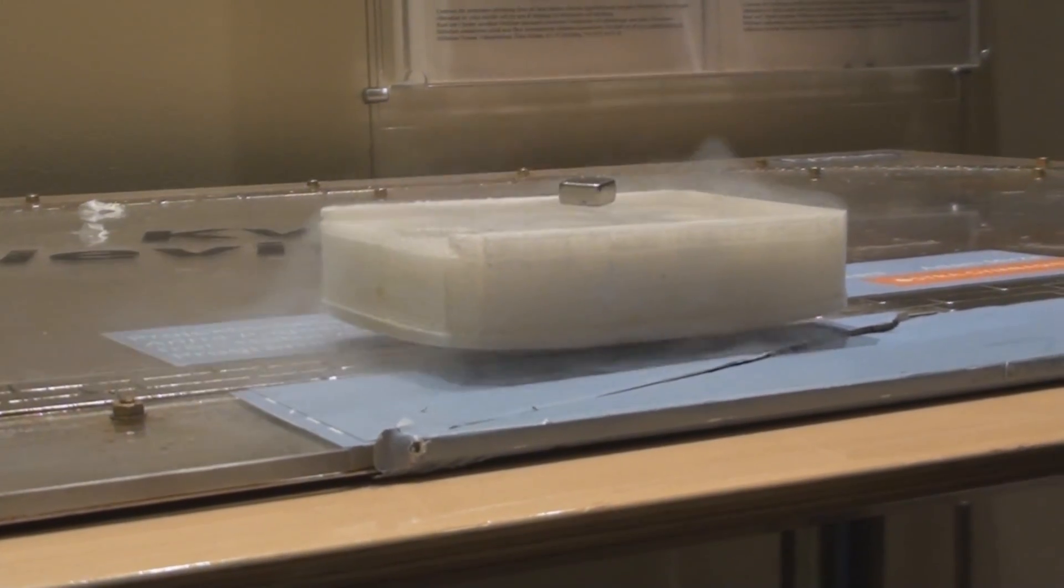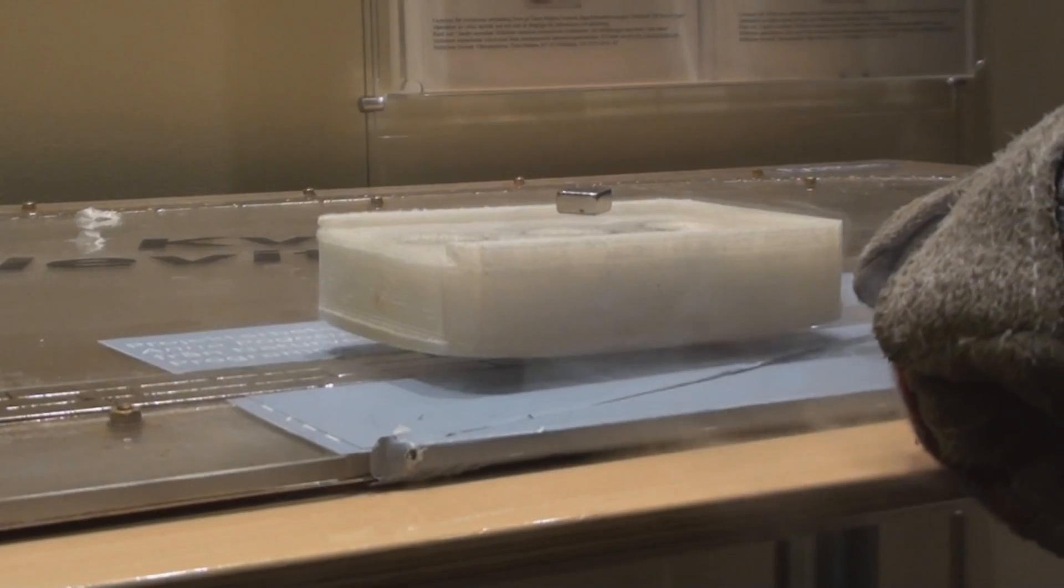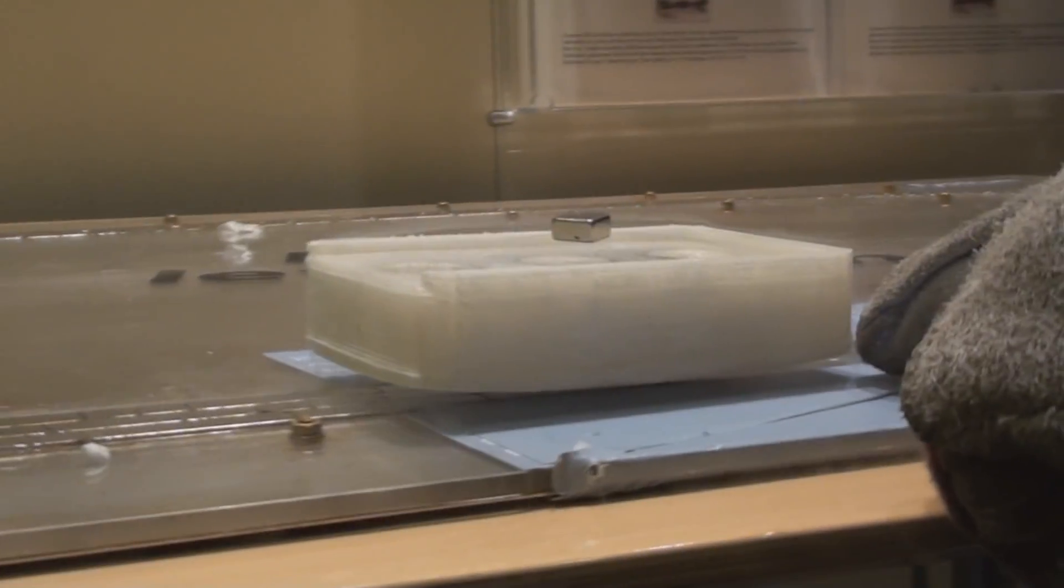A rather interesting thing to do though is to put a magnet over the superconductor which is already levitating over the magnetic track. Because now we can clearly observe that the magnetic field from the track is dispelled as we can see that it doesn't significantly influence the magnet above the superconductor.